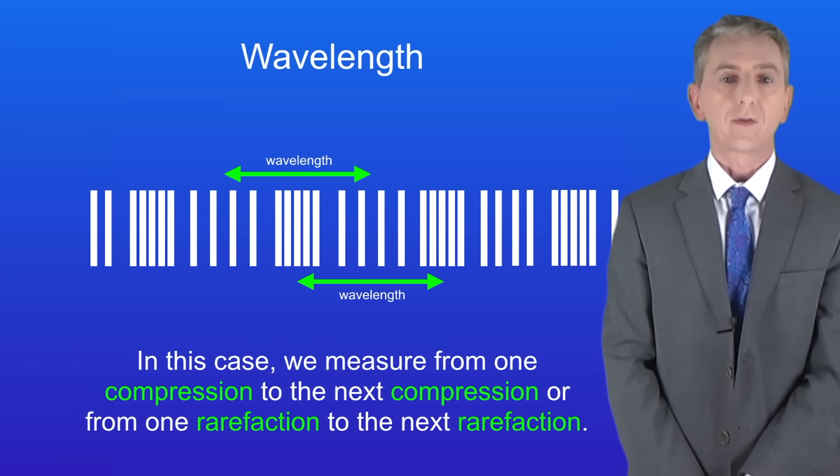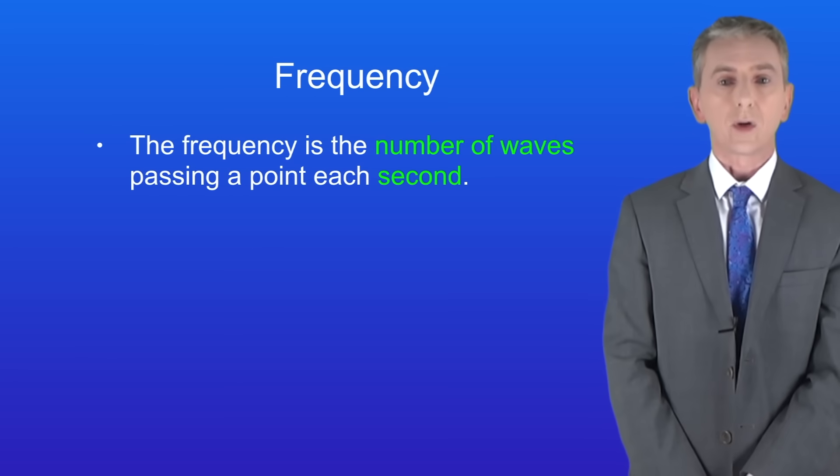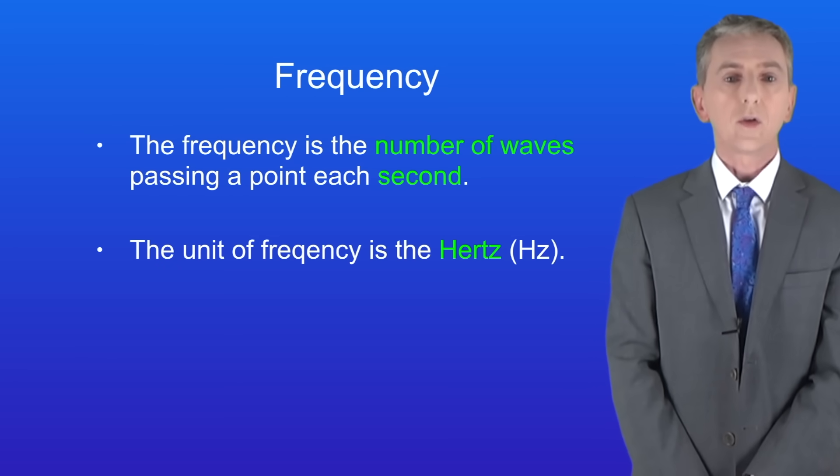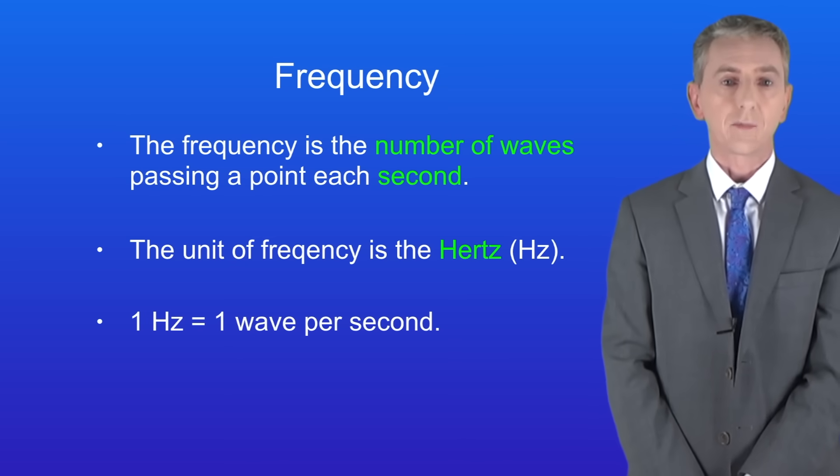Okay, the next property of waves is the frequency. The frequency is the number of waves passing a point each second, and the unit of frequency is the hertz. One hertz equals one wave per second.